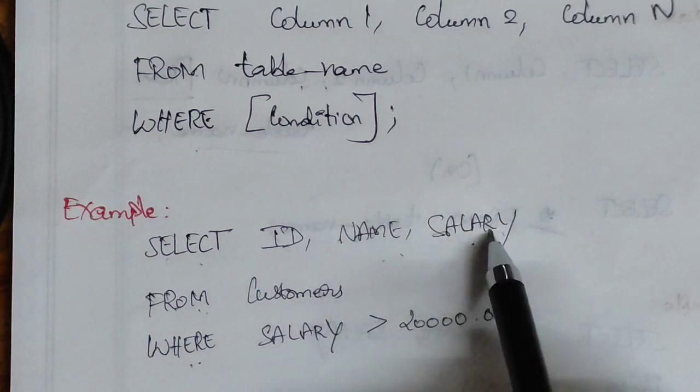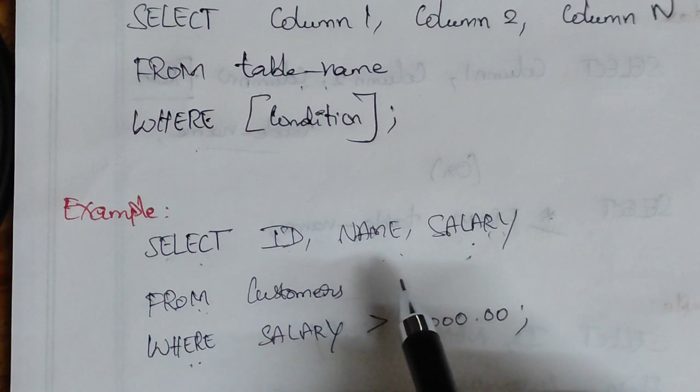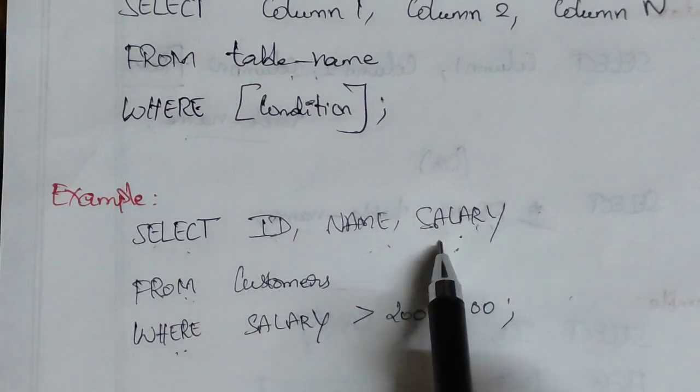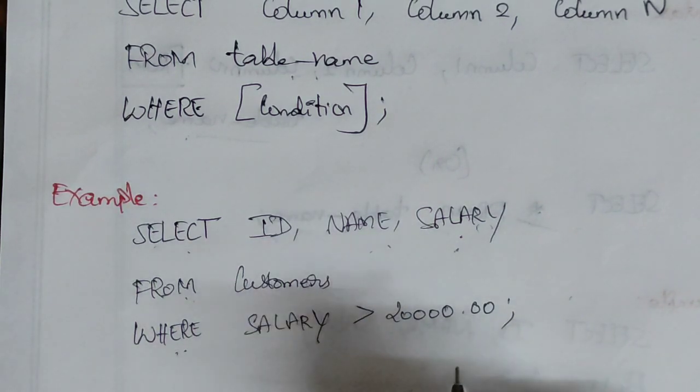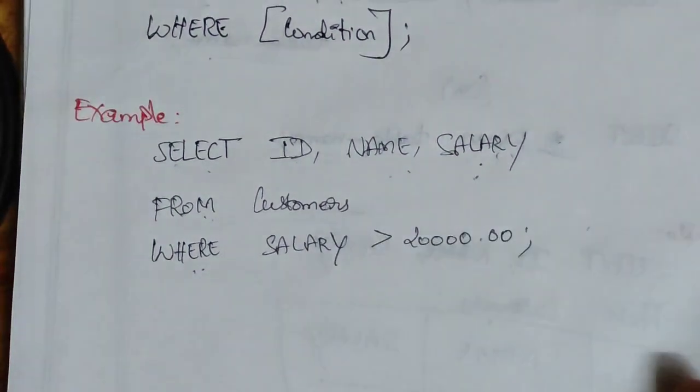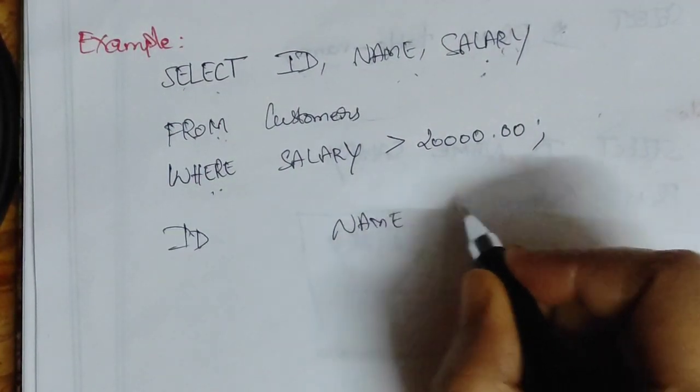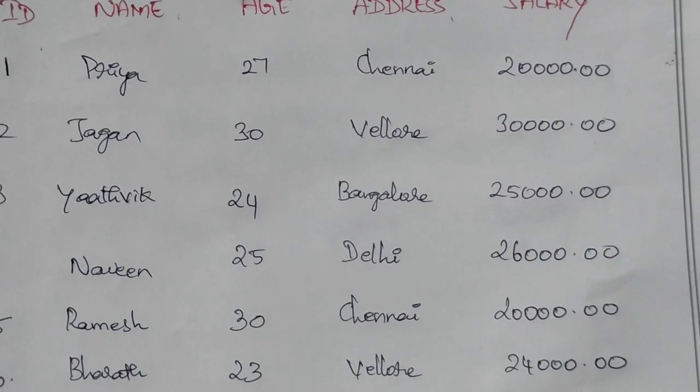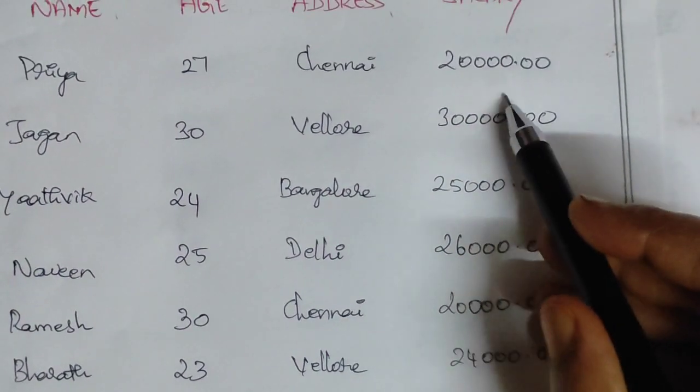SELECT ID, Name, Salary FROM Customers. In the table, there is ID, Name, Salary - these are the attributes. This is the SELECT statement. Now we have an extra condition: salary greater than 20,000. If salary is greater than 20,000, then we will print the name and ID.